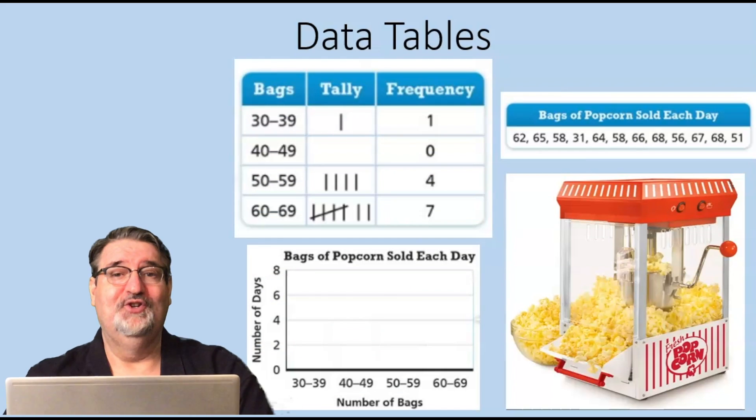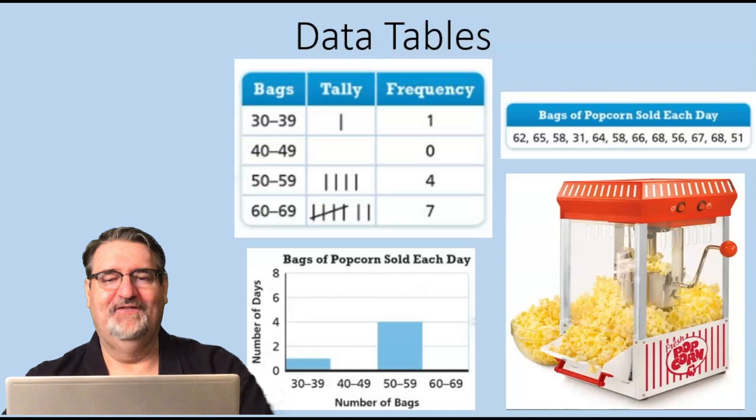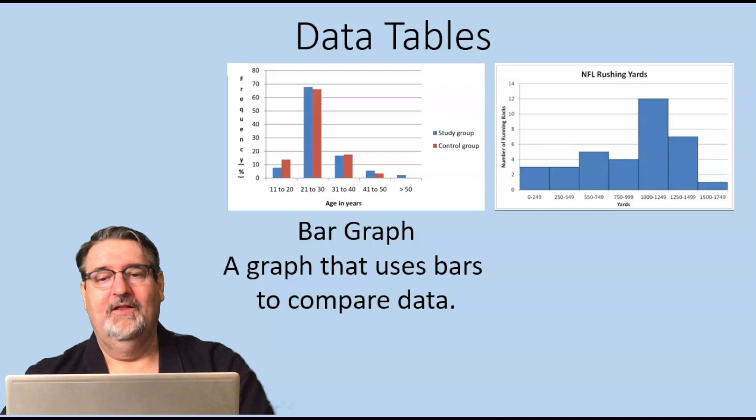Another thing you can do right after that is to graph it. So on this first one we showed one for 30 to 39. Next for 40 to 49 there weren't any, so we don't put anything. Next for 50 to 59 there were four, and the last one 60 to 69 there are seven.